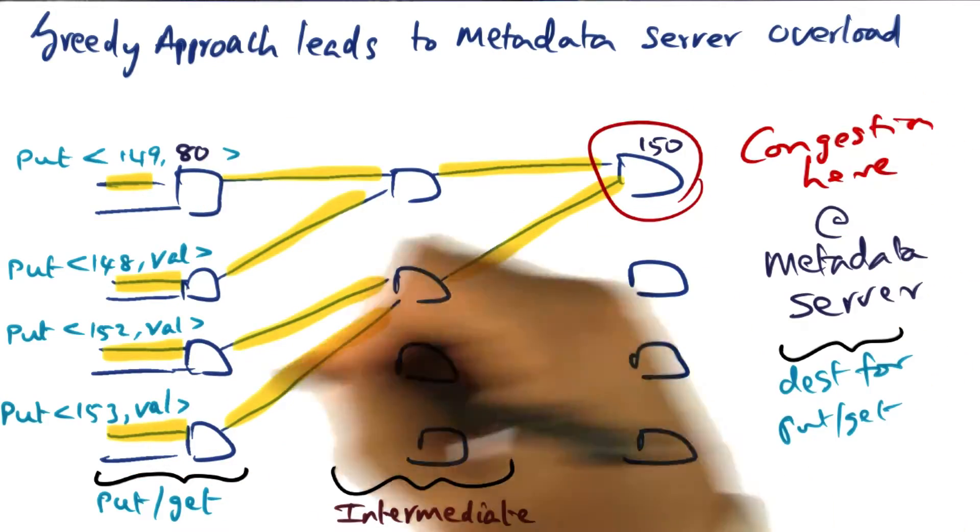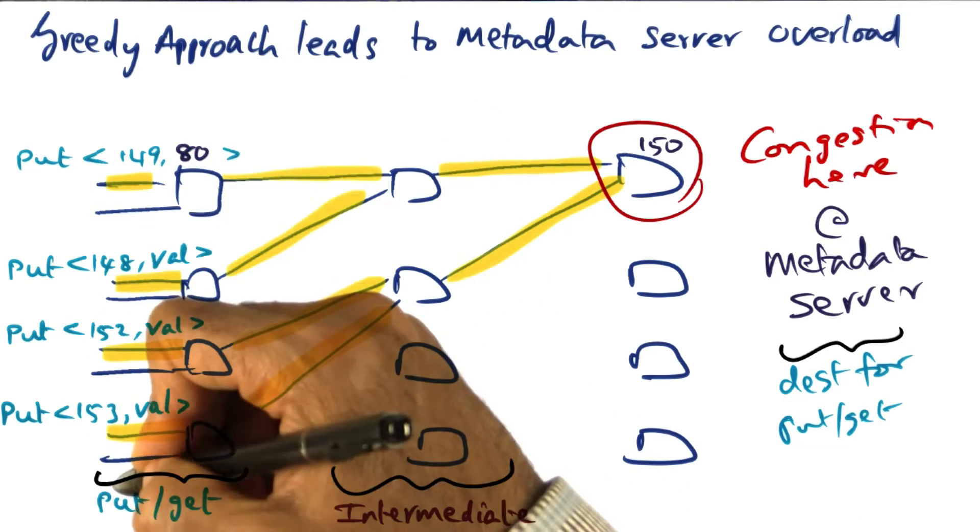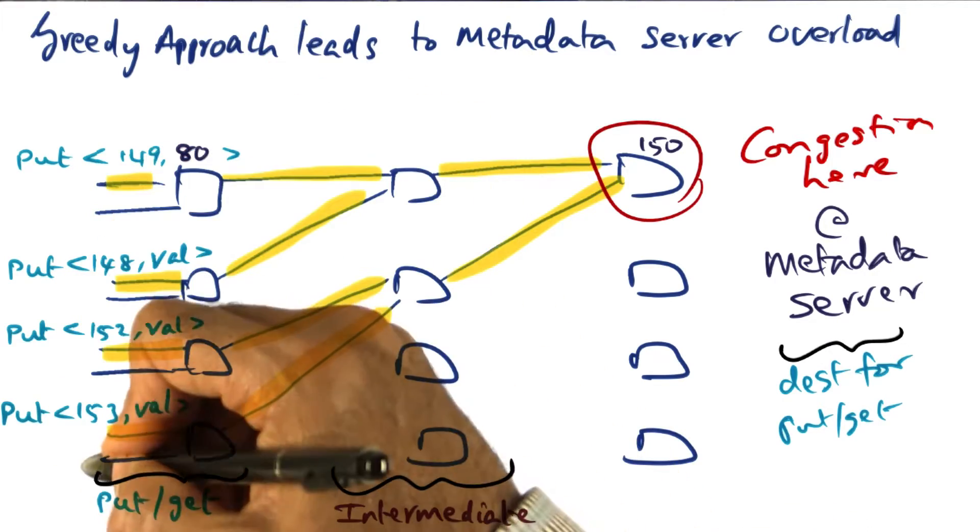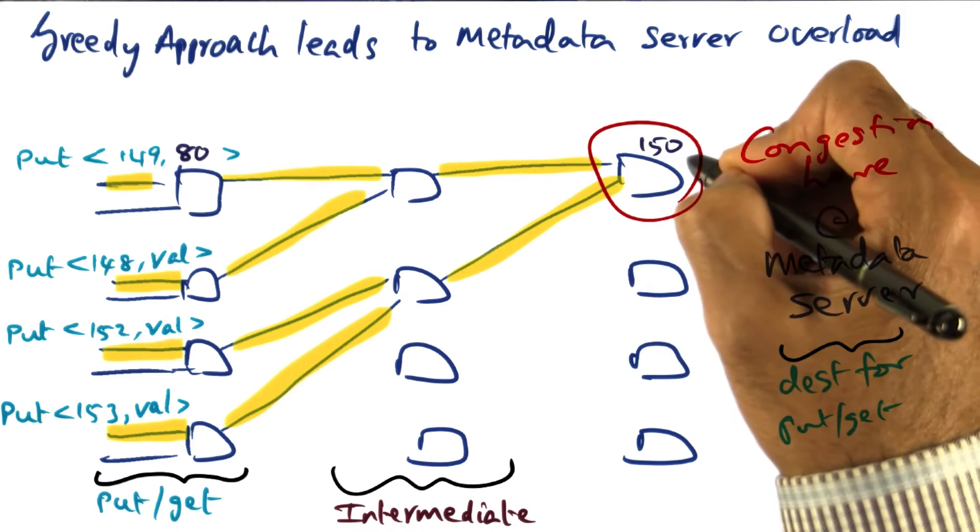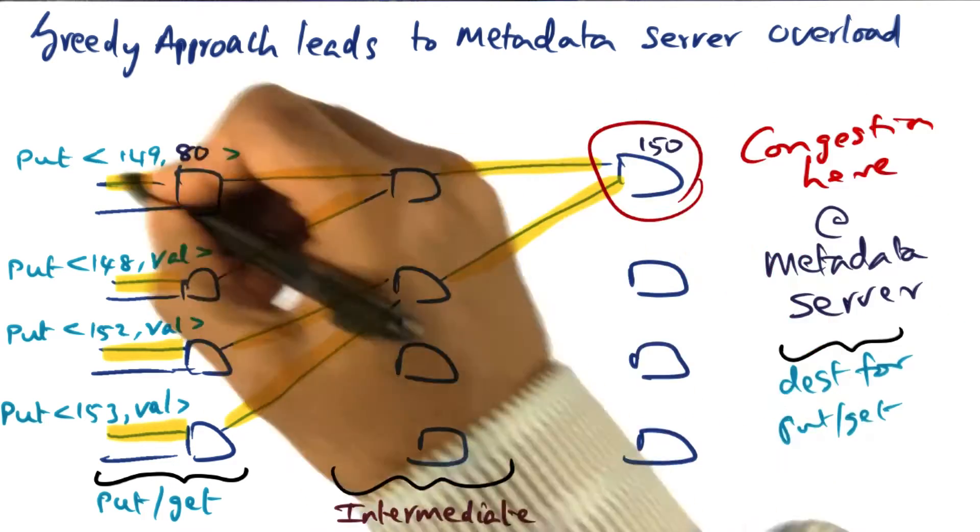Well, it turns out that 150 is the closest ID corresponding to all of these keys that we're talking about here. So all of these puts will result in going to one node, namely the node ID 150 in terms of the put operation.